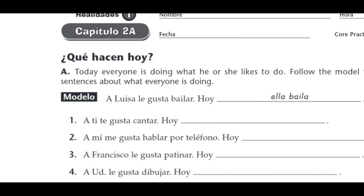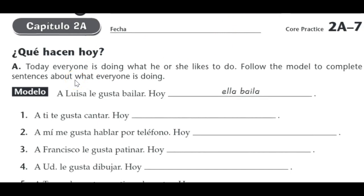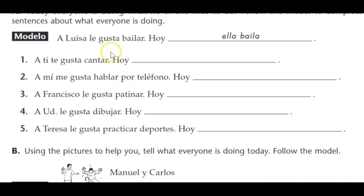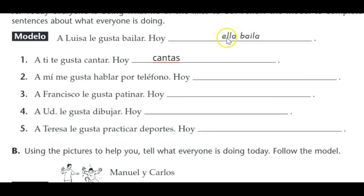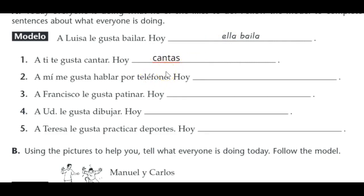Moving on to 2A7: ¿Qué hacen hoy? Today everybody is doing what he or she likes to do. Follow the model to complete sentences about what everyone's doing. For example: A Luisa le gusta bailar — Luisa likes to dance — so hoy ella baila — today she's dancing. Number one: A ti te gusta cantar — you like to sing. So today: hoy cantas. Take cantar, remove the AR, and the tú ending is AS. You do not need to write the pronoun in Spanish — it's obvious. Only use it for emphasis or clarification.